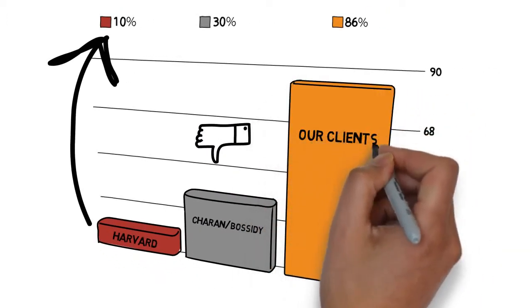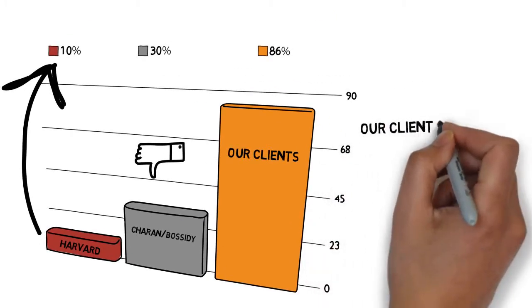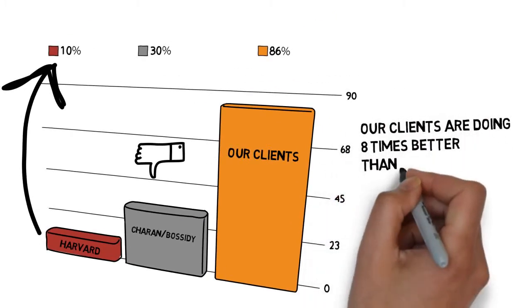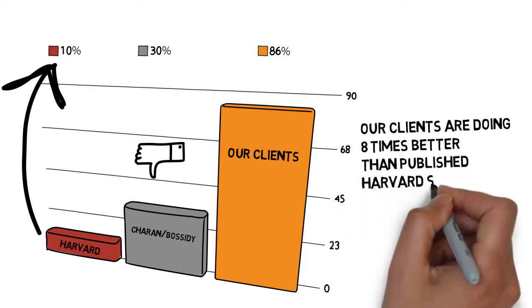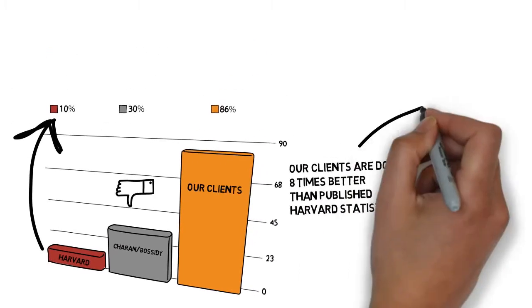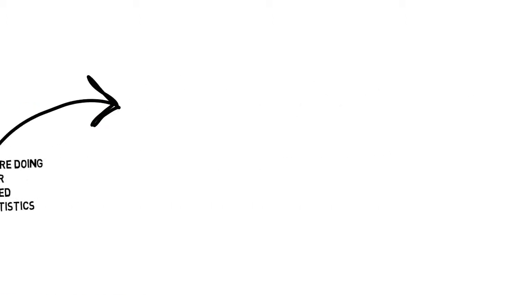Organizations that use the methods in our book implement their strategic actions at a rate of 3 to 8 times the published performance rates of most organizations. As a result, these organizations are leaders in more than 25 business sectors.